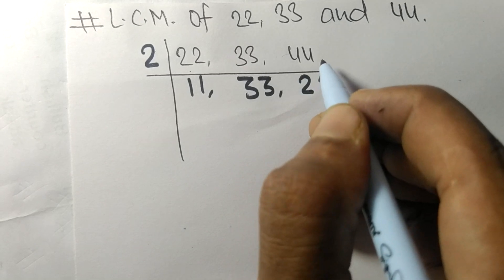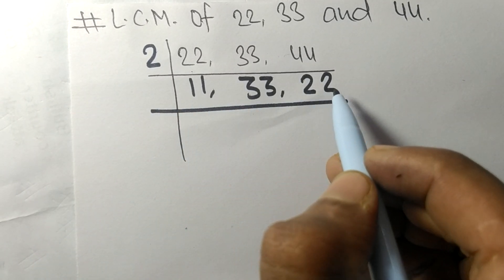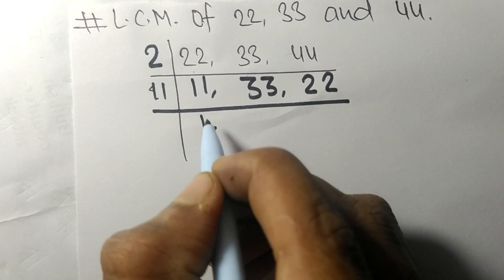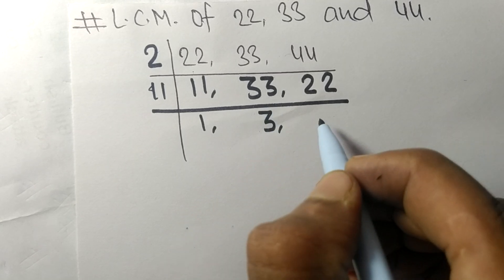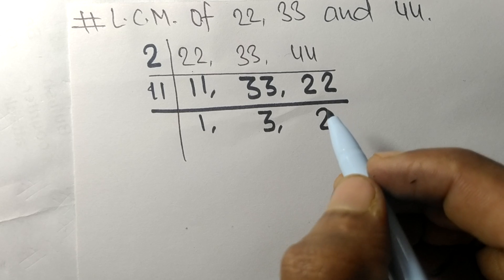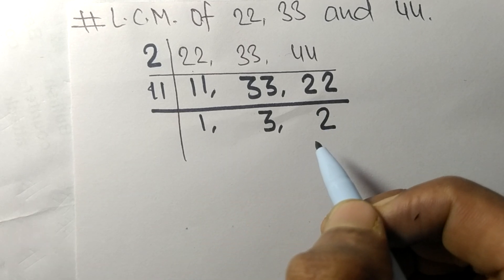Now these all numbers are divisible by 11. So 11 times 1 means 11, 11 times 3 means 33, 11 times 2 means 22. So now these numbers 1, 3, and 2 are not divisible by the same number.